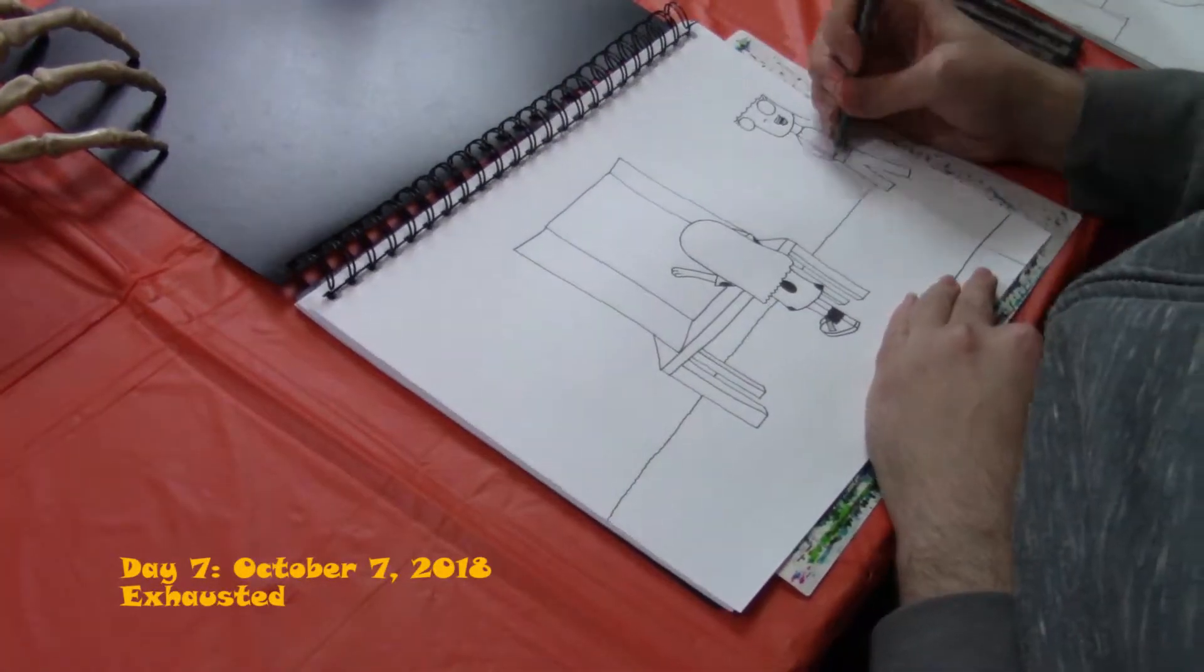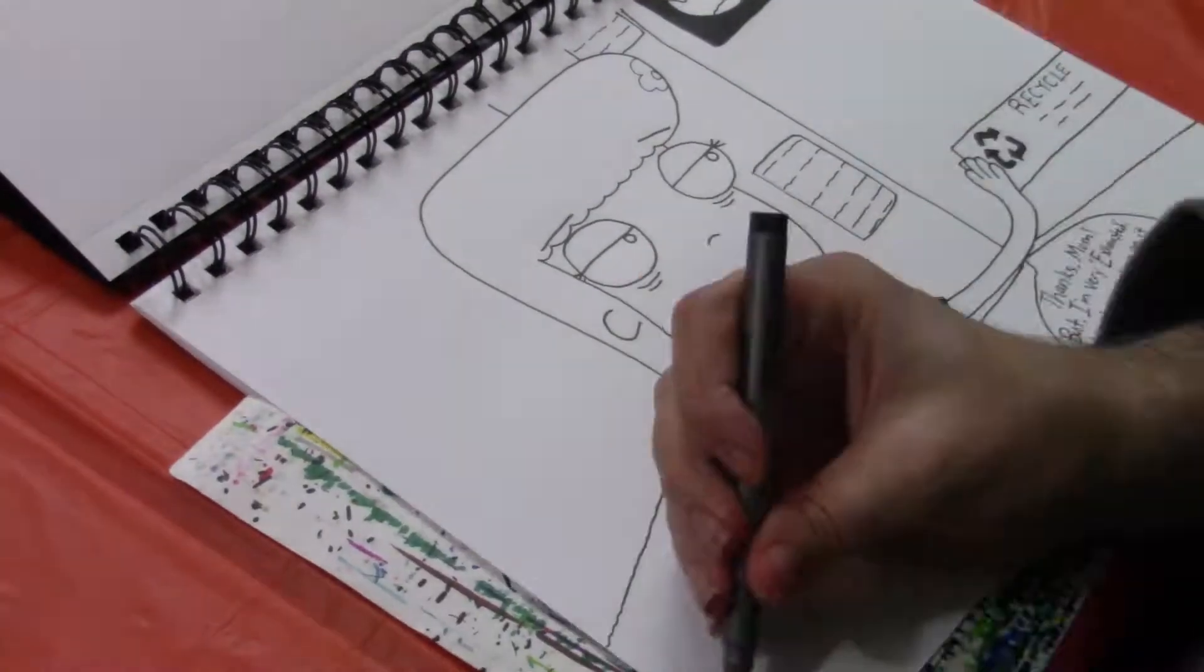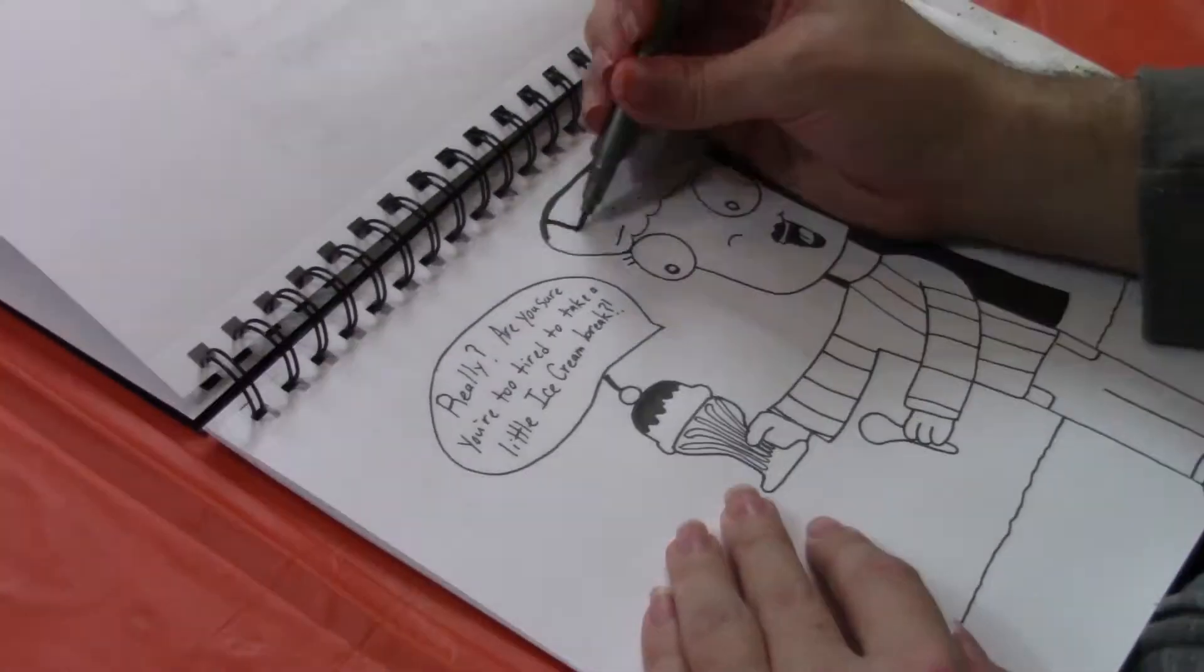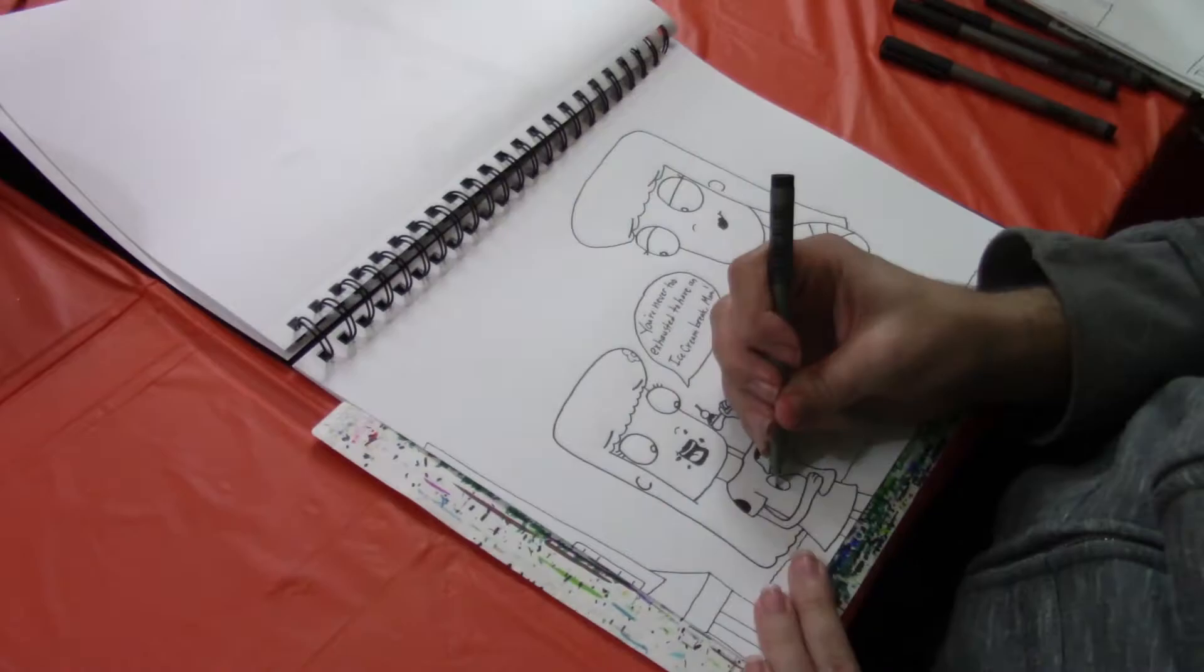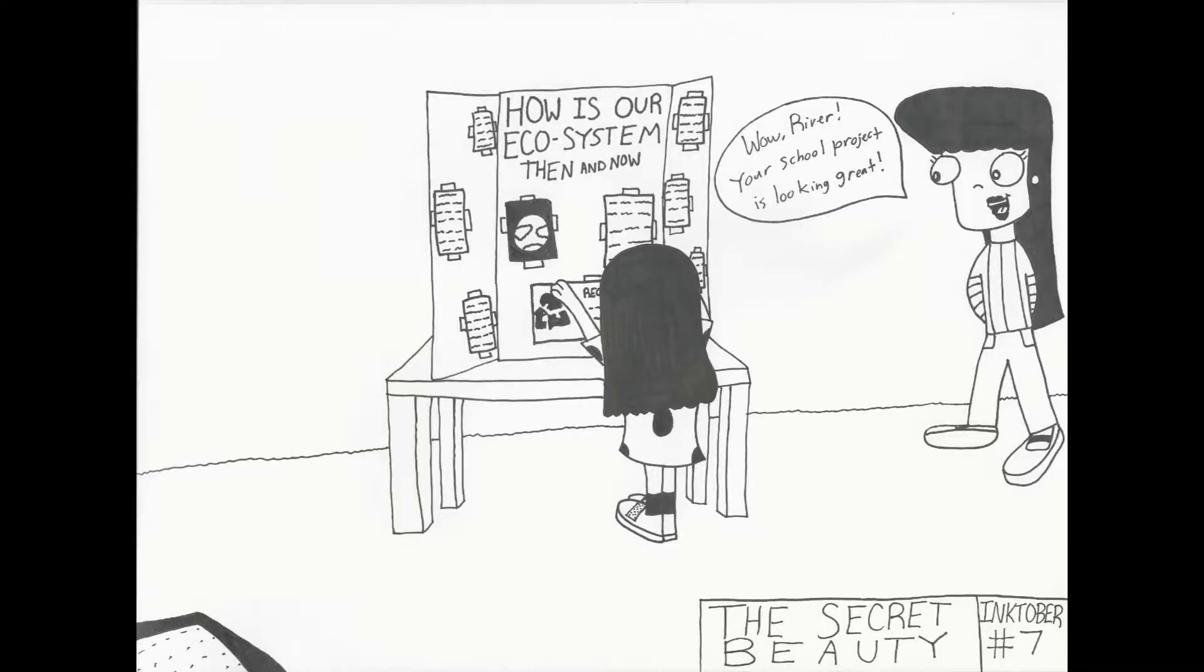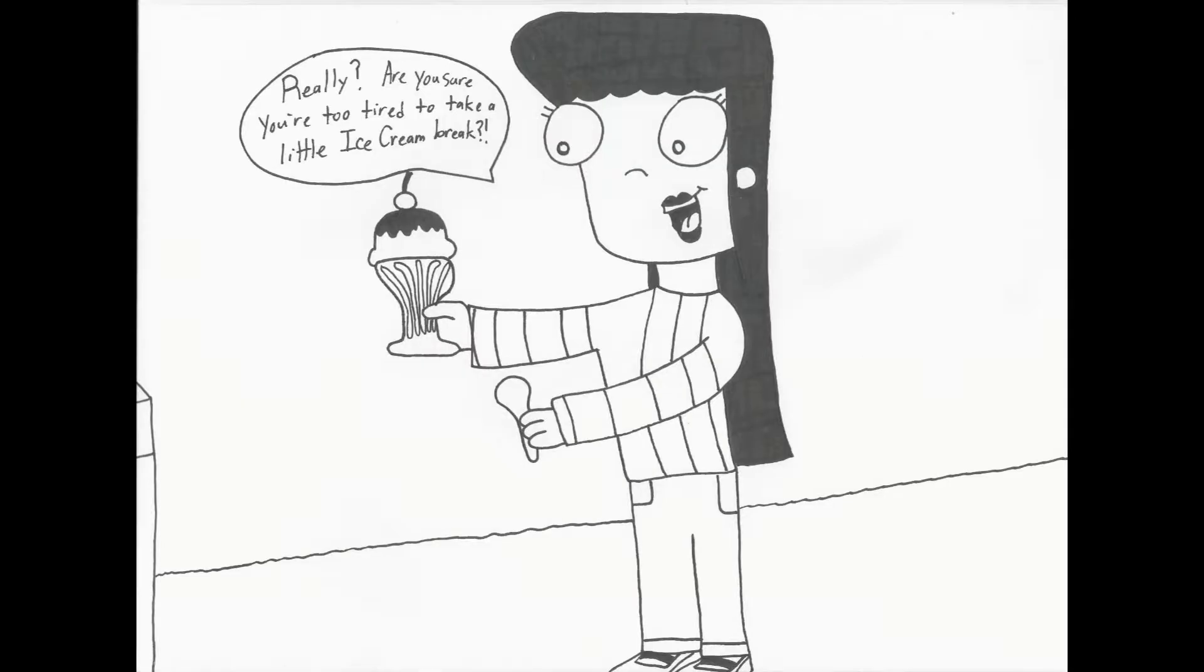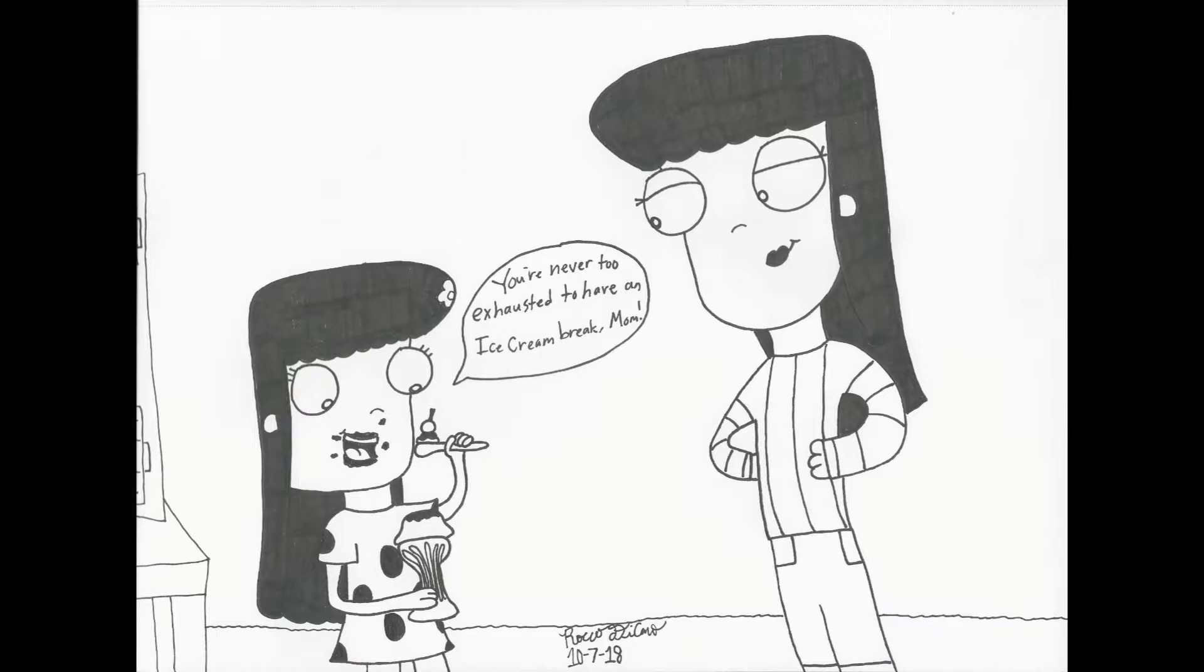Finally, for comic number seven, the prompt word was exhausted. So, I created a story of River doing a school project and being a little exhausted by it. Thankfully, her mother comes in to kind of help lift her spirits up. This comic is four panels long. Wow, River! Your school project is looking great! Thanks, Mom, but I'm very exhausted. I have been working on it all night and all morning. I'm extremely tired. Really? Are you sure you're too tired to take a little ice cream break? You're never too exhausted to have an ice cream break, Mom.